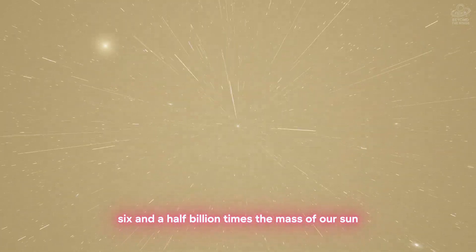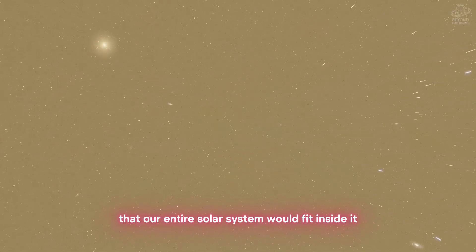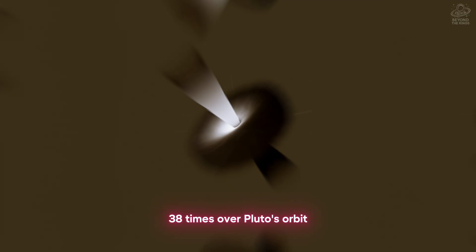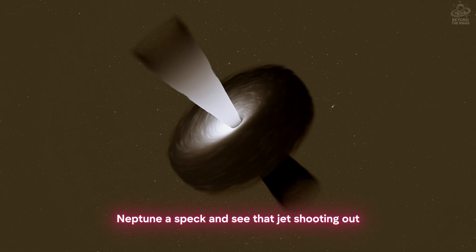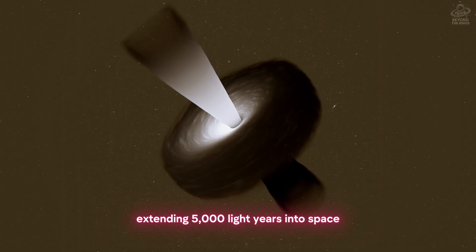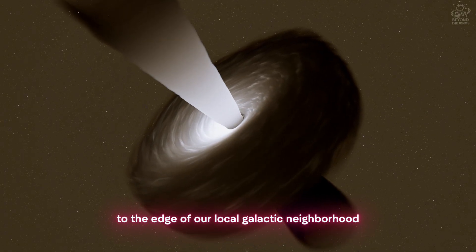Six and a half billion times the mass of our sun. The event horizon is so large that our entire solar system would fit inside it 38 times over. Pluto's orbit? That's nothing. Neptune? A speck. And see that jet shooting out? That's a beam of plasma extending 5,000 light years into space. That's longer than the distance from Earth to the edge of our local galactic neighborhood.